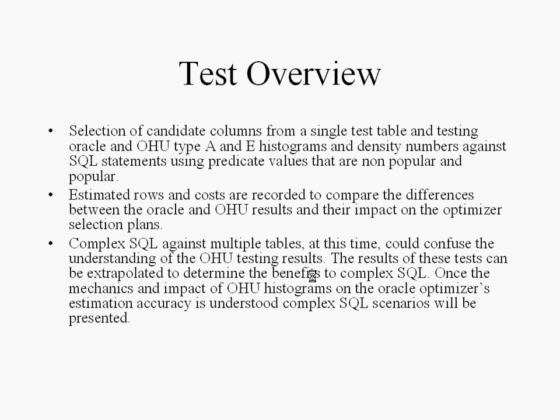Test overview: essentially, it will involve selecting candidate columns from the test table and testing Oracle and OHU Type A histograms and density numbers against SQL statements using critical values that are non-popular and popular. Estimated rows and costs are recorded. Scripts will be run from a SQL Plus session and the results indicated, showing the effects on range operators, equal operators, IN operators — all operators essentially.